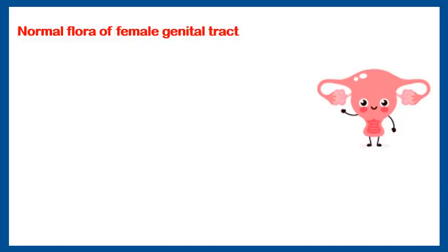Normal flora of the female genital tract. Lactobacilli are a group of gram-positive bacilli. They are present inside the vagina, inside the distal urethra, and near the external urethral opening. They are present in large numbers and they are responsible for the acidity — the low pH of the vagina. The low pH of the vagina is good because it restricts other pathogenic bacteria.